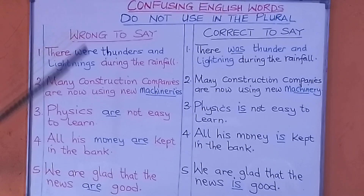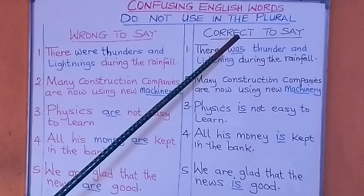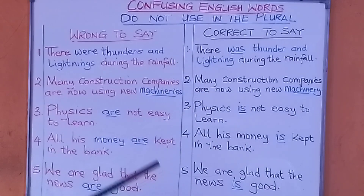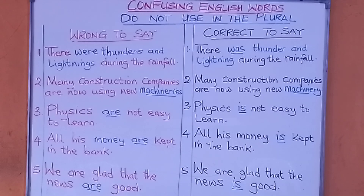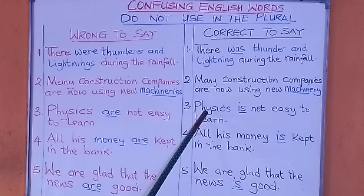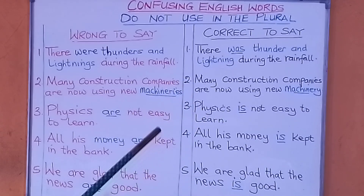Now before we look at practical examples of how to use them, let's note some things. Today we are looking at thunder and lightning. We say we do not use them in the plural form. Machinery, we do not use that in the plural form. Subjects like physics, mathematics, aeronautics, and politics — we do not use them in the plural.